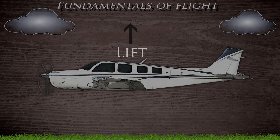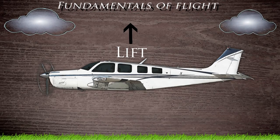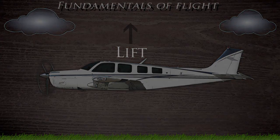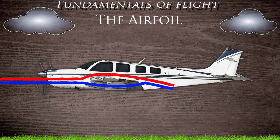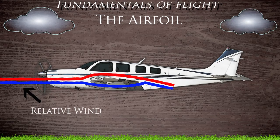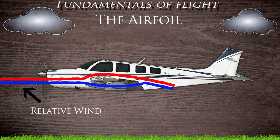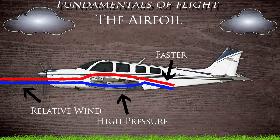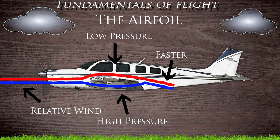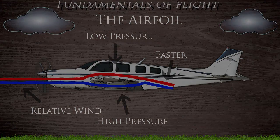Now let's take a step back to lift. We know that the wing is what makes the aircraft able to fly, but how? From now on let's call the wing an airfoil. Looking at this airfoil, you see that there is air — or relative wind — being forced both above and below the airfoil. Because of the shape of the airfoil, the relative wind is being forced to move faster across the top than it is the bottom. This causes high pressure below, producing lift, and low pressure above. This is also known as Bernoulli's principle.